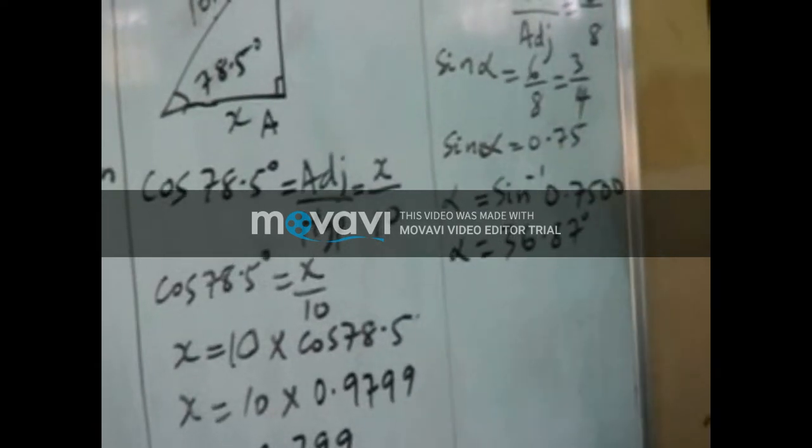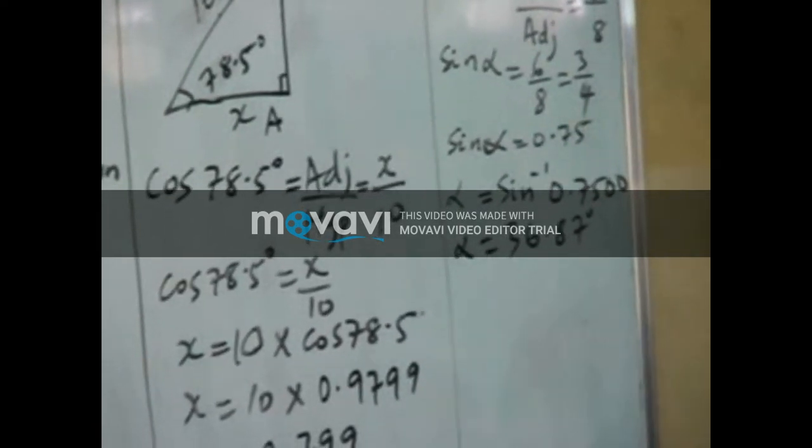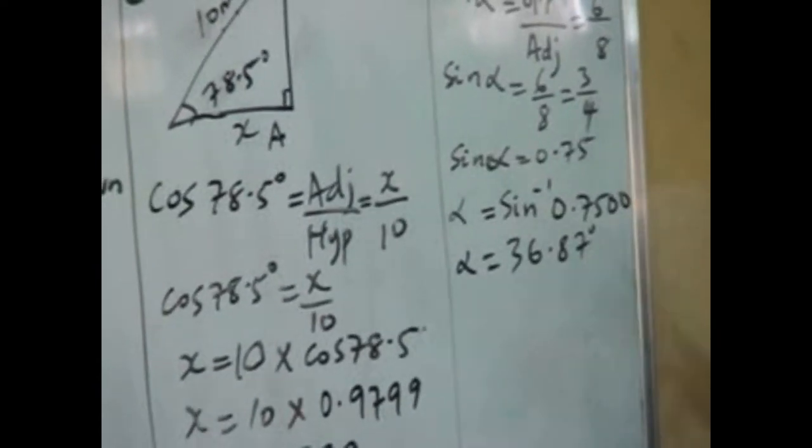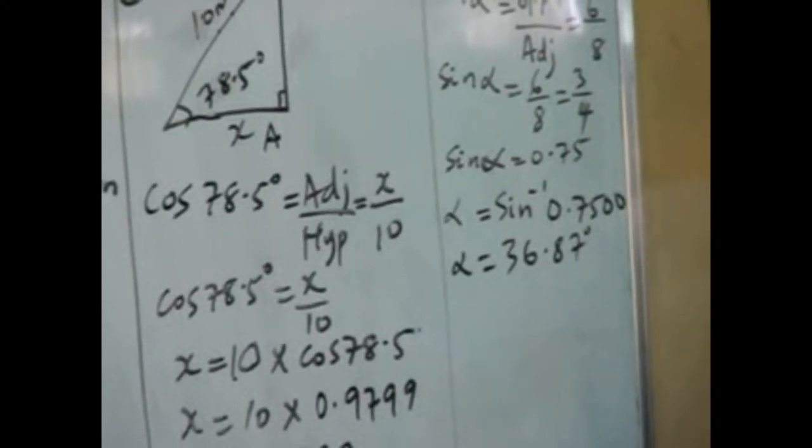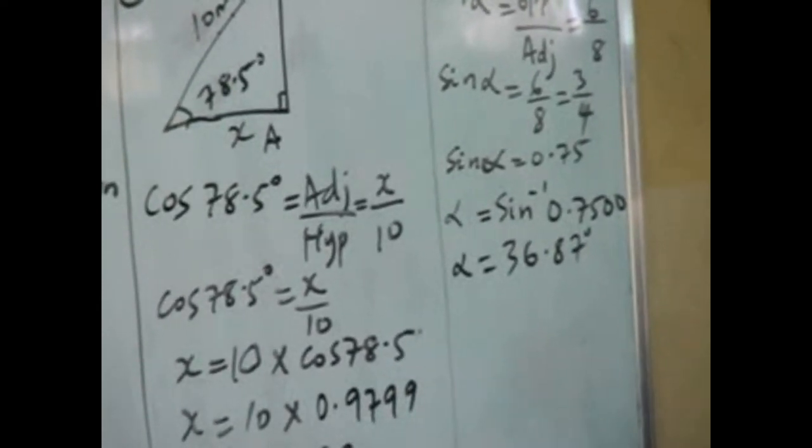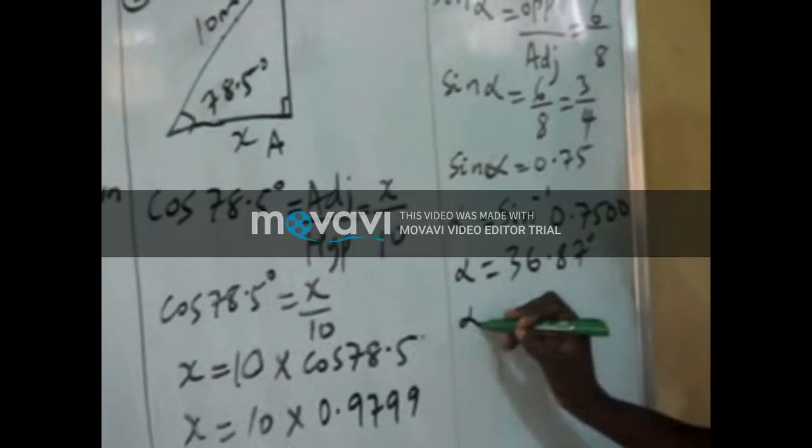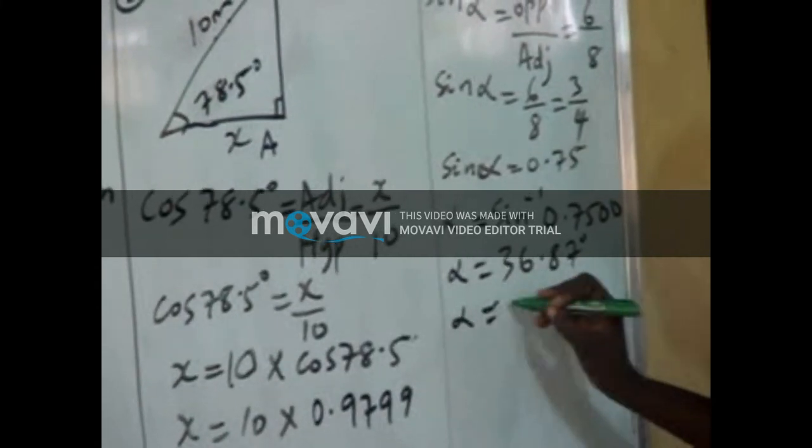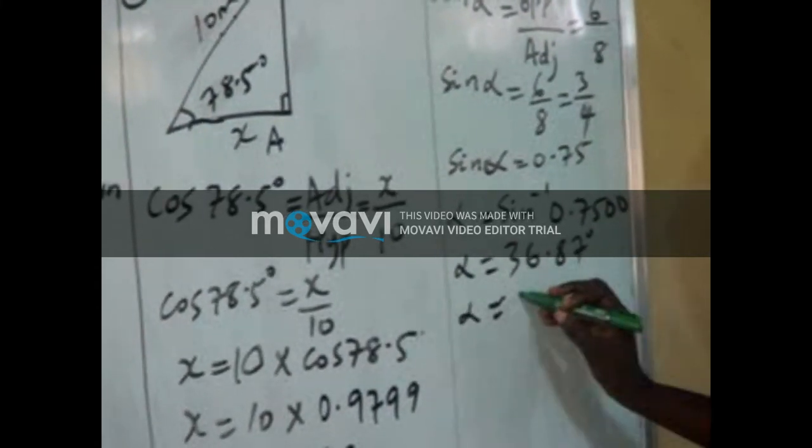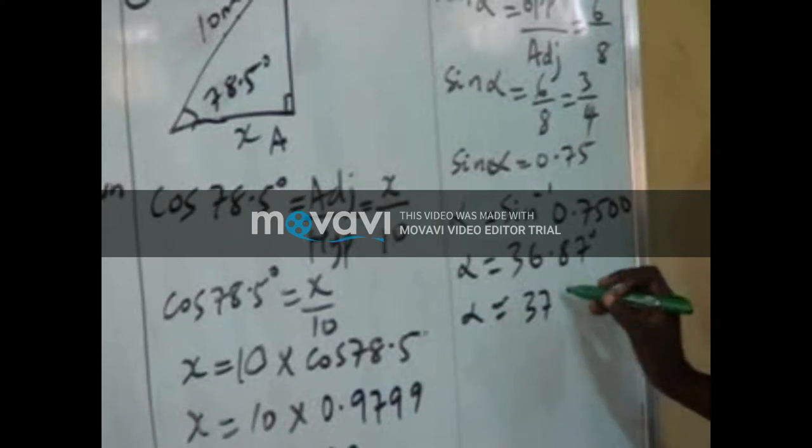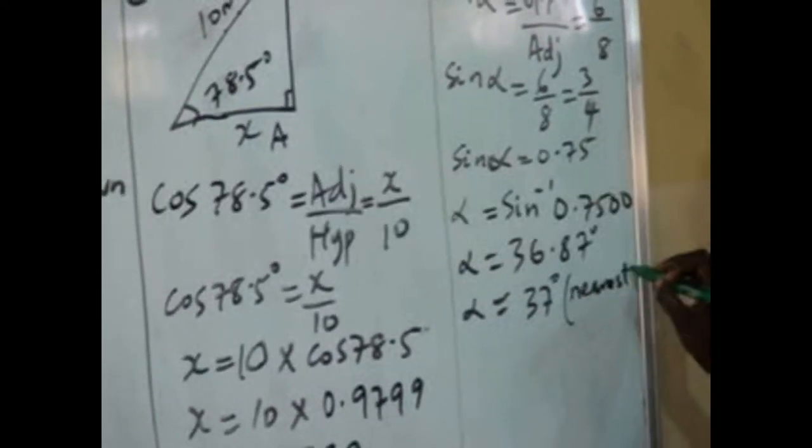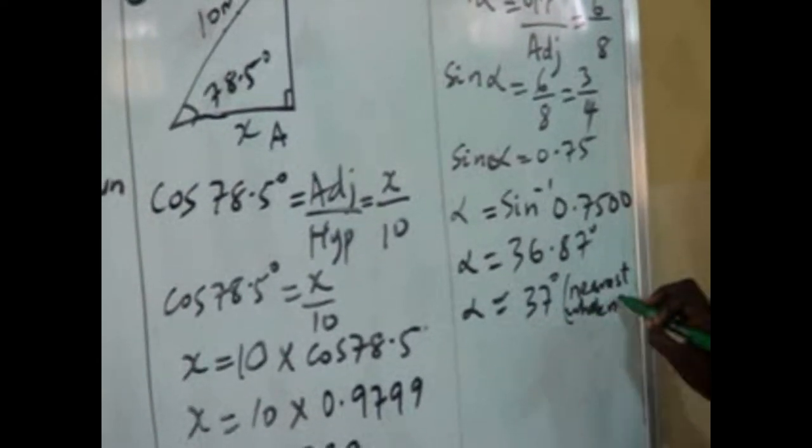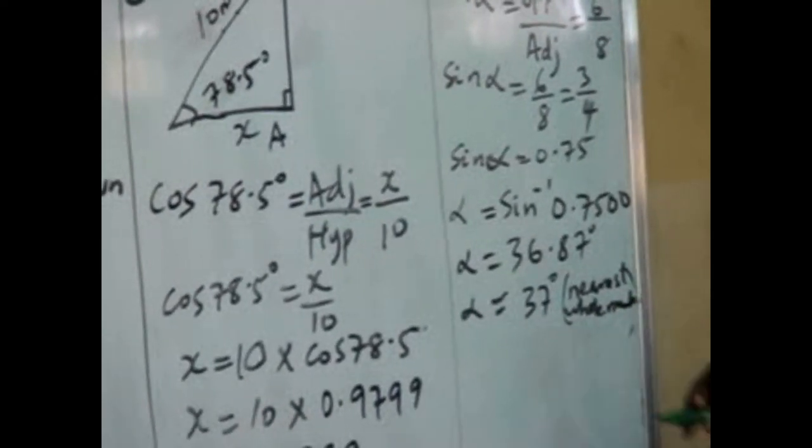So if you are asked to round it up to 1 decimal place, if possible, then it becomes 36.9. If you are asked to change it to the nearest whole number, it becomes 37, or 36.1 to that. So I want to round it up to the nearest whole number, that was 37 degrees.